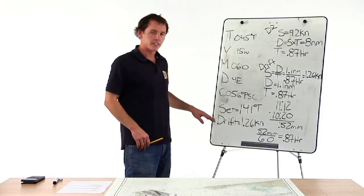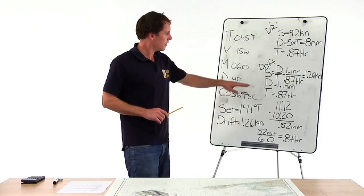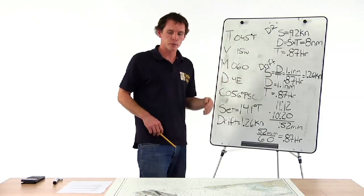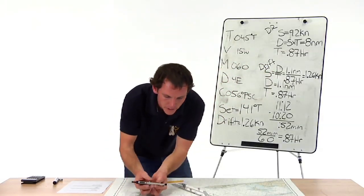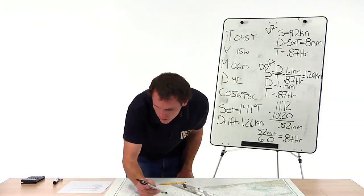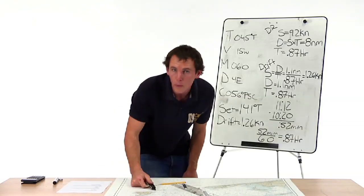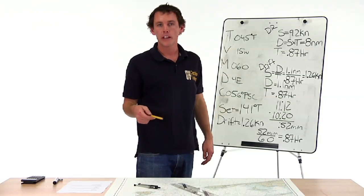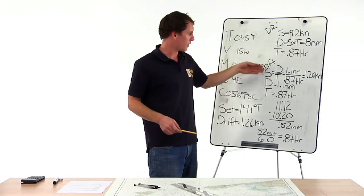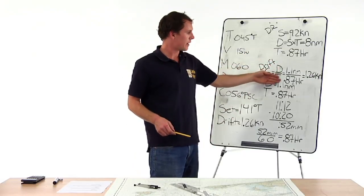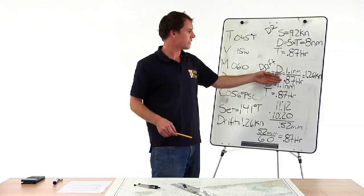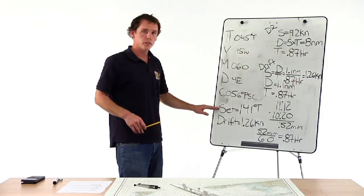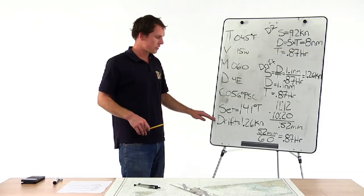Now our drift is a speed in knots. Speed equals distance over time. We measure from our DR position to our actual position: it comes to 1.1 nautical miles. We drifted 1.1 nautical miles in 0.87 hours. So 1.1 divided by 0.87 equals 1.26 knots — that's the drift. Our set was 141 degrees true and our drift was 1.26 knots.